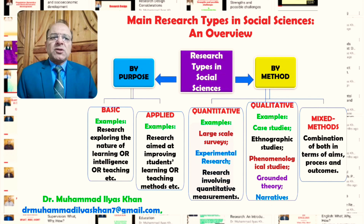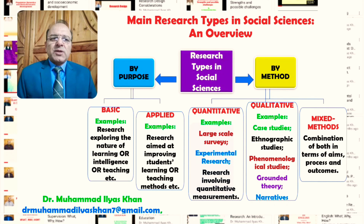This was a general overview of the main research types in social sciences. To summarize: social science research has been categorized into research by purpose and research by methods. Research by purpose includes basic research and applied research. Research by methods has been categorized into three categories: quantitative research, qualitative research, and mixed methods research.